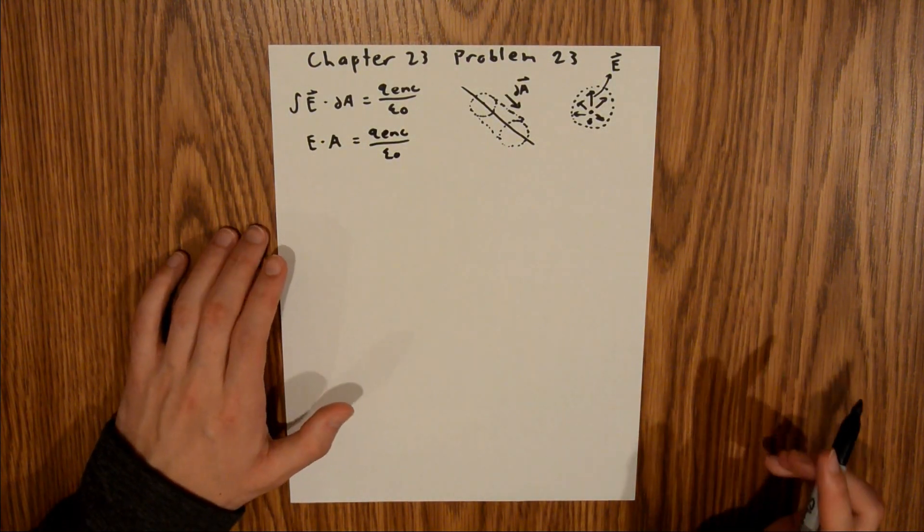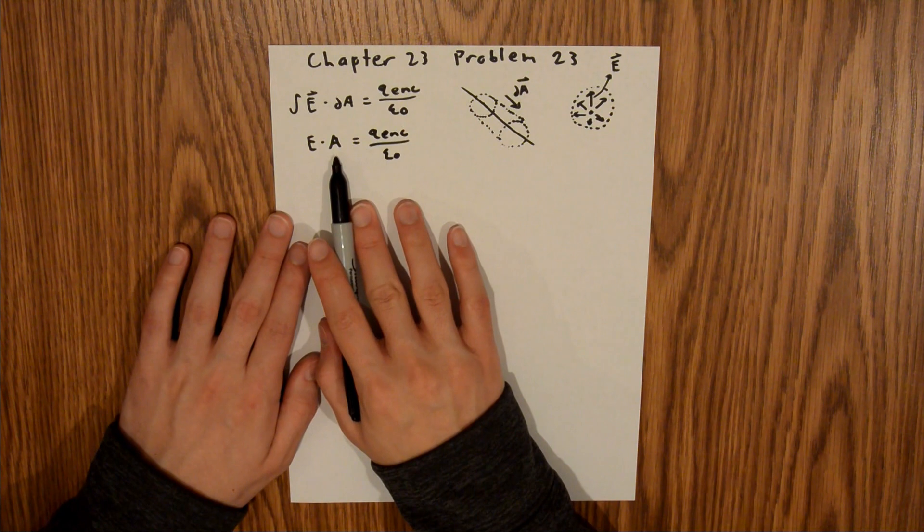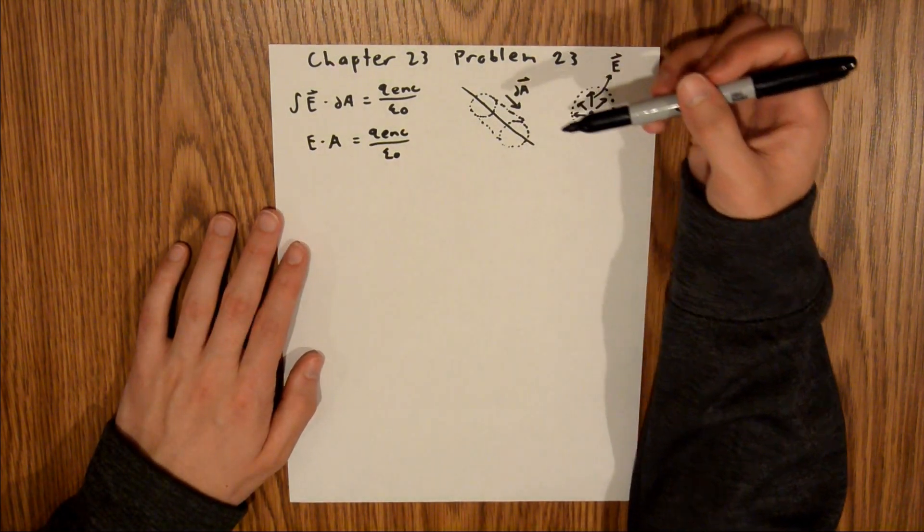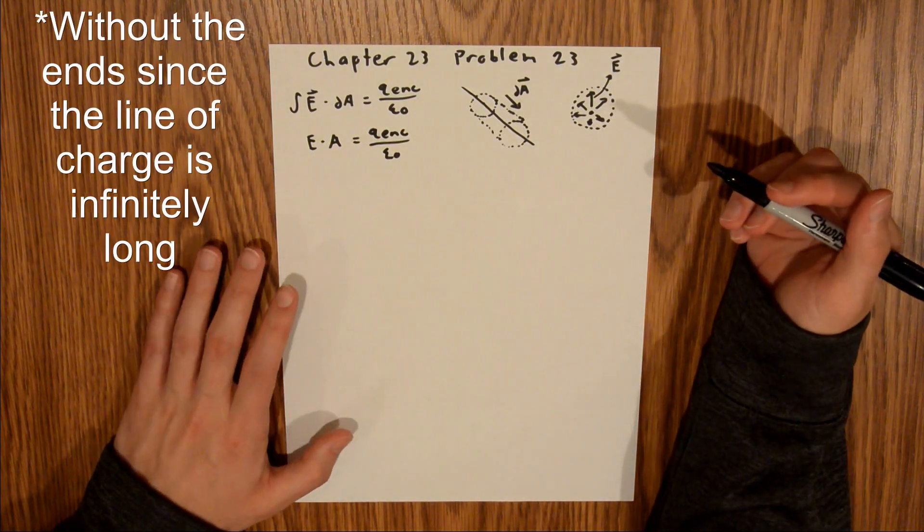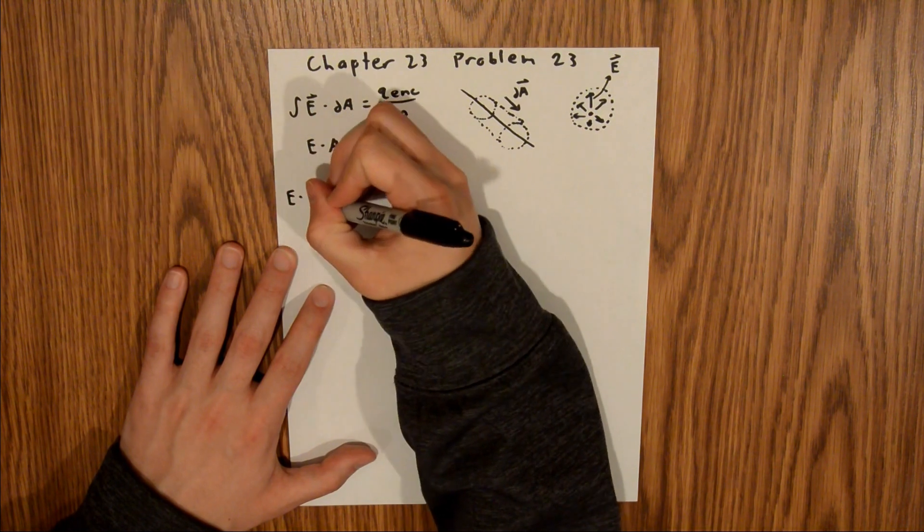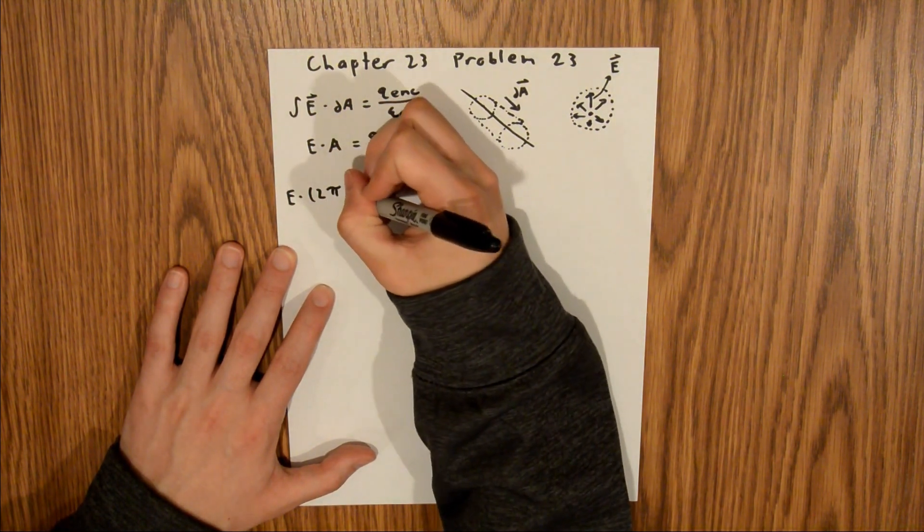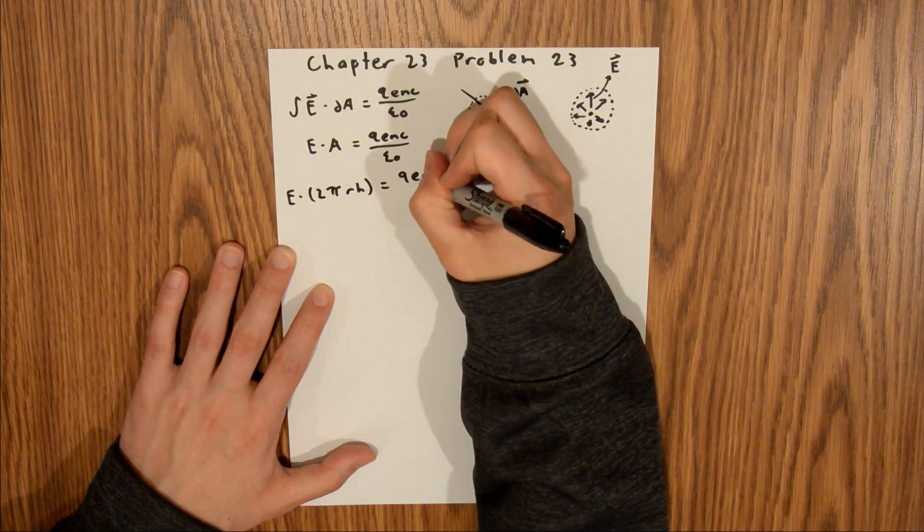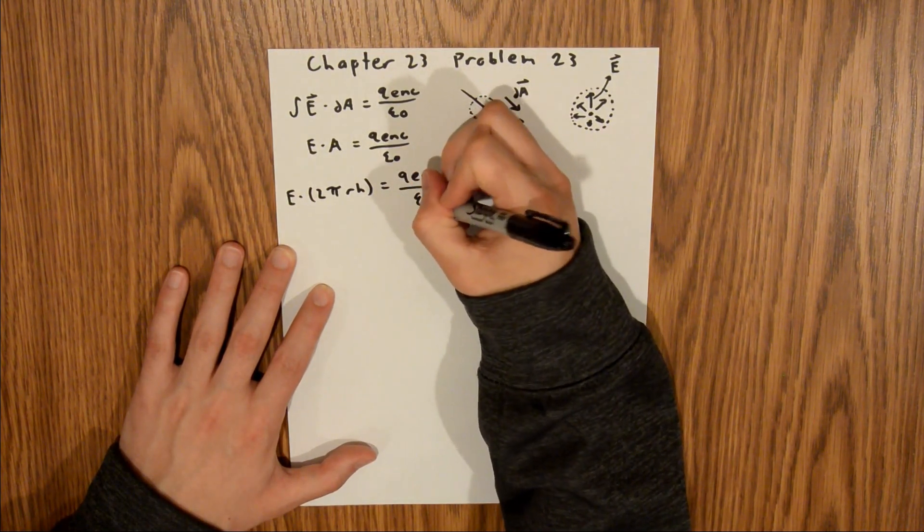And so we can find this value for A, which is the surface area of your Gaussian surface, which I mentioned before is this cylinder. The surface area of a cylinder is 2 pi r h. And so we can plug that in, and we'll have E dot 2 pi r h is equal to Q enclosed over epsilon naught.